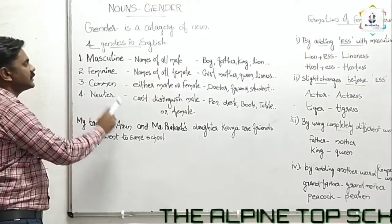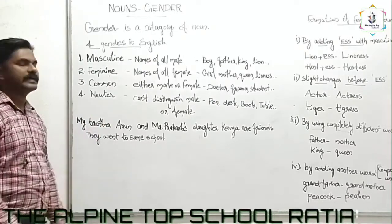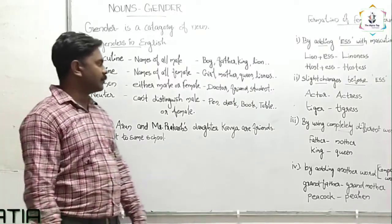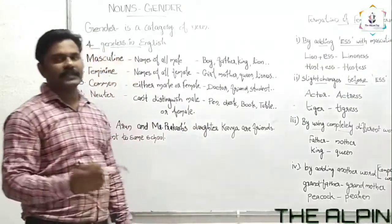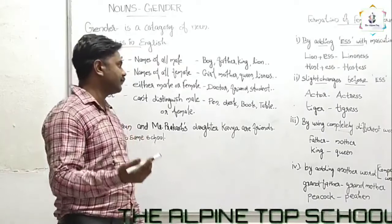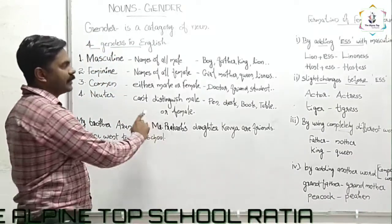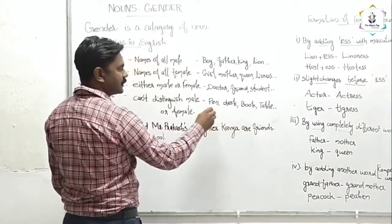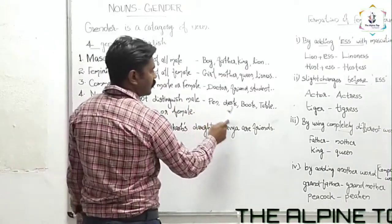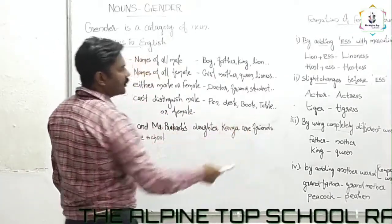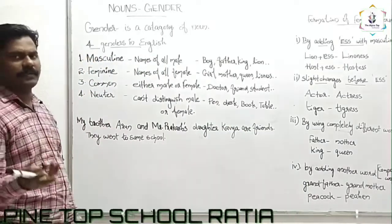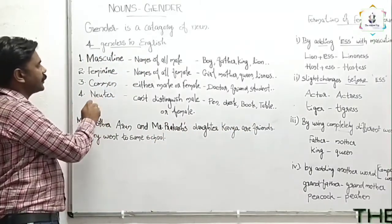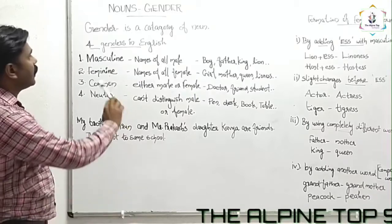The last one is neuter gender. The spelling is N-E-U-T-E-R. All the non-living nouns will come in neuter gender. Non-living things — things that have no life — we call non-living things. For example: pen, desk, book, table, car, building. These are all non-living things, and all these nouns will come in the neuter gender category.